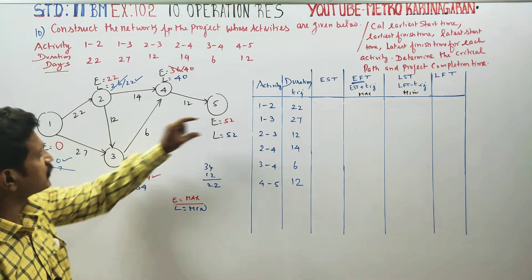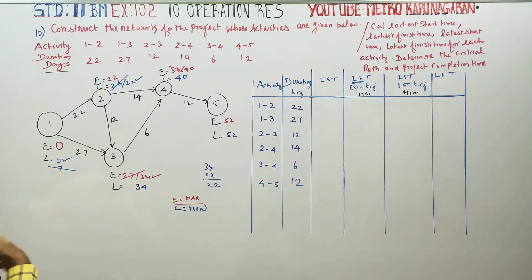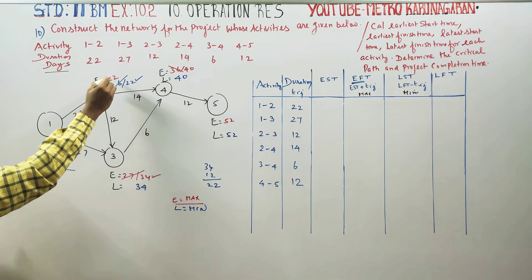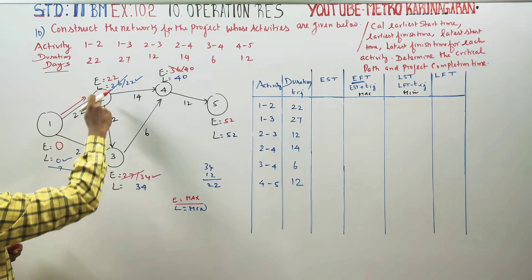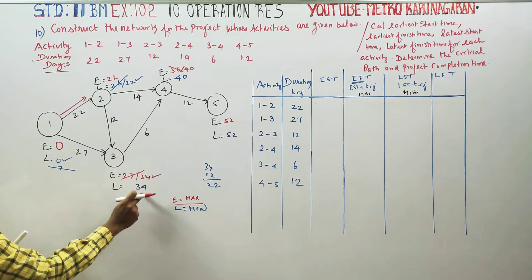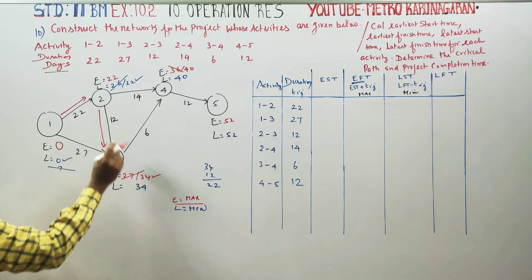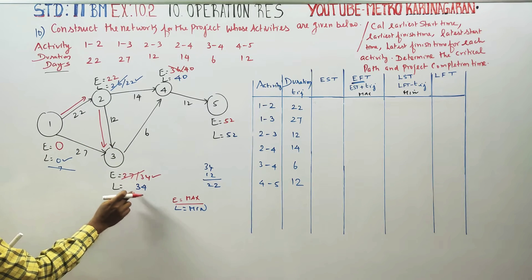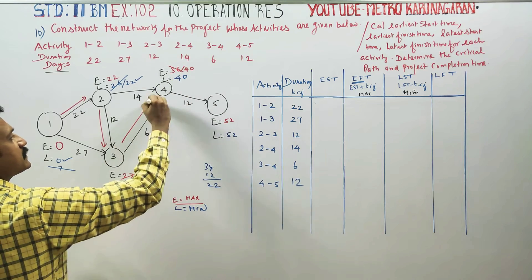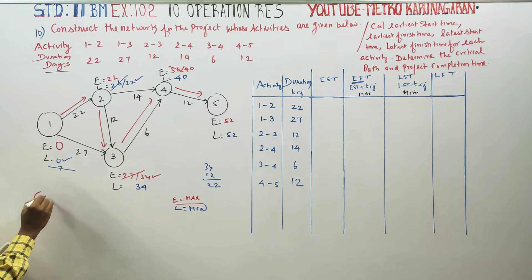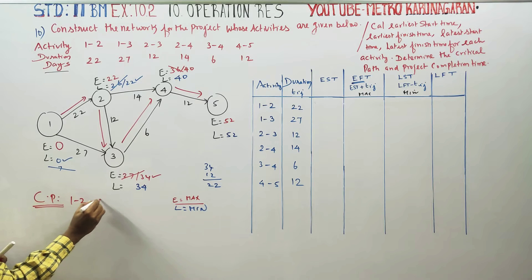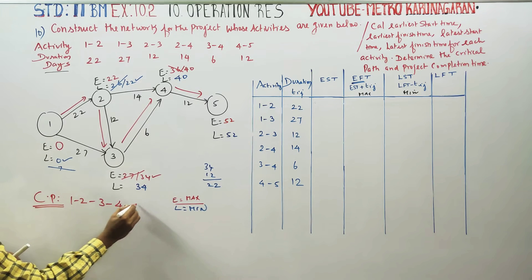If E and L are the same, it is the critical path. Critical path: node 1 has E=0, L=0 — same, so it is on the critical path. Node 2: E=22, L=22 — same, critical path. Node 3: E=34, L=34 — same, critical path. Node 4: E=40, L=40 — same, critical path. Node 5 is the final node. Critical path is 1→2→3→4→5.